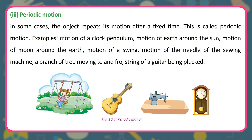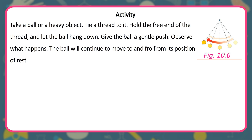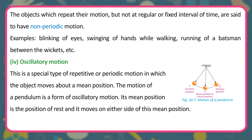In some cases, the object repeats its motion after a fixed time. This is called periodic motion. Examples include: motion of a clock pendulum, motion of earth around the sun, motion of moon around the earth, motion of a swing, motion of the needle of the sewing machine, a branch of a tree moving to and fro, and the string of a guitar being plucked. The objects which repeat their motion but not at regular or fixed intervals of time are said to have non-periodic motion. Examples: blinking of eyes, swinging of hands while walking, running of a batsman between the wickets, etc.